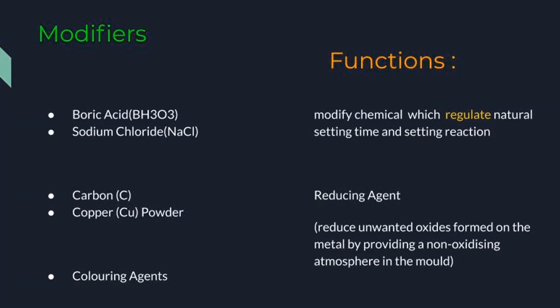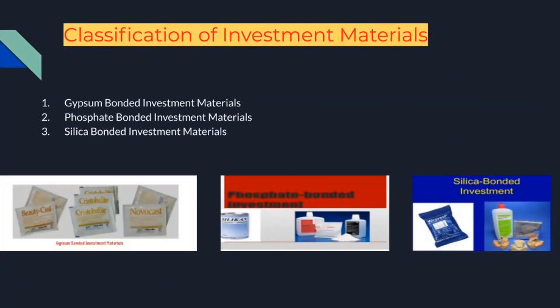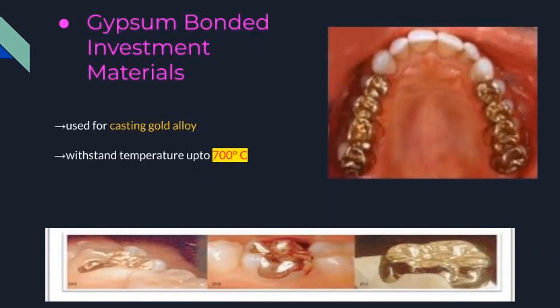Now we are going to explain the classification of investment materials. The refractory material, which is silica, is the same in all types of investment materials. On the basis of the binder used, investment materials may be classified into three types: one, gypsum bonded; two, phosphate bonded; and three, silica bonded investment materials.